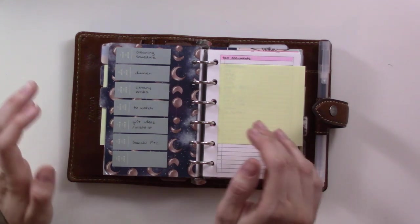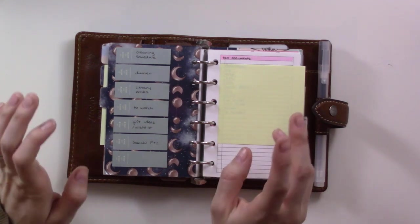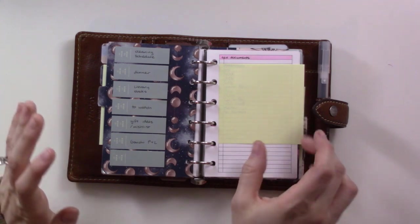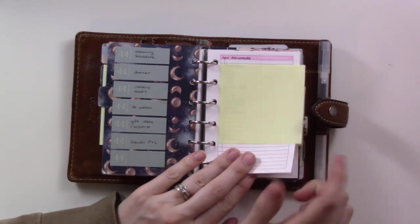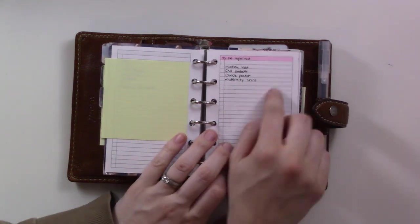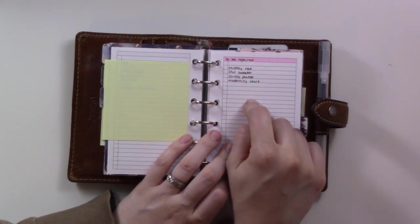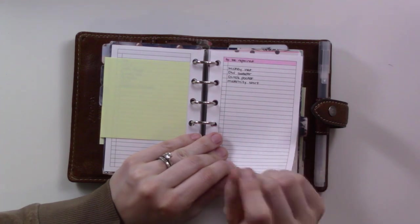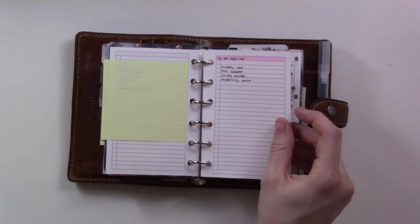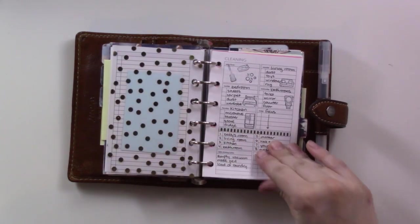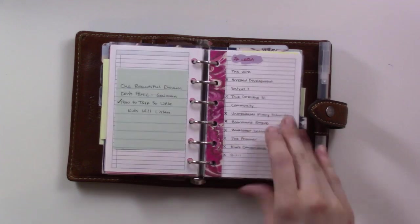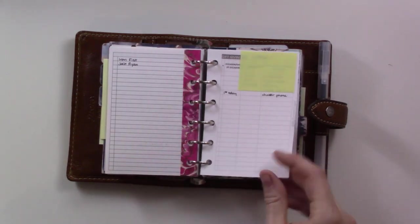Next tab is reference, kind of also a couple projects. I added a couple things to here and have not indexed them yet. This is a list of documents I need to get for our tax prep. This is a list of things that I need to mend, it's like a couple minutes and a little bit of thread and I haven't gotten around to it but here we go. Then the rest I think you've seen all of this before - cleaning schedule, dinner ideas, library books, to watch list.